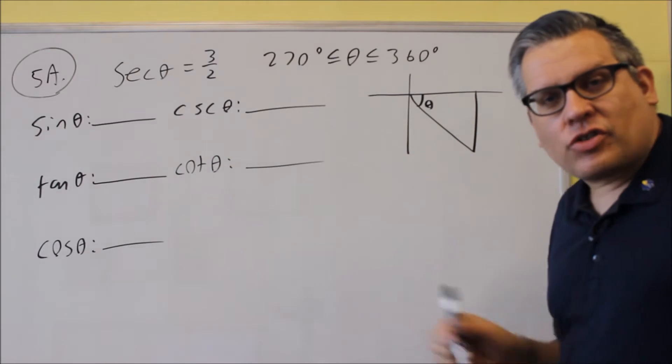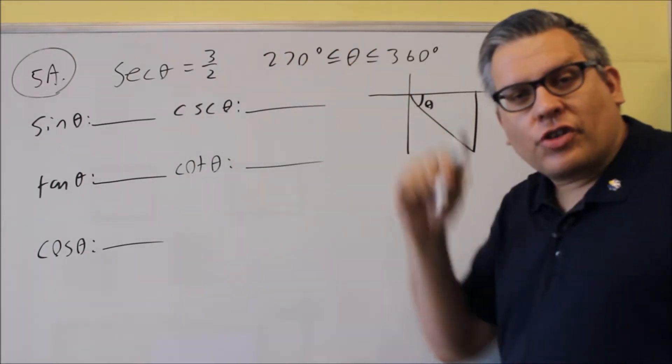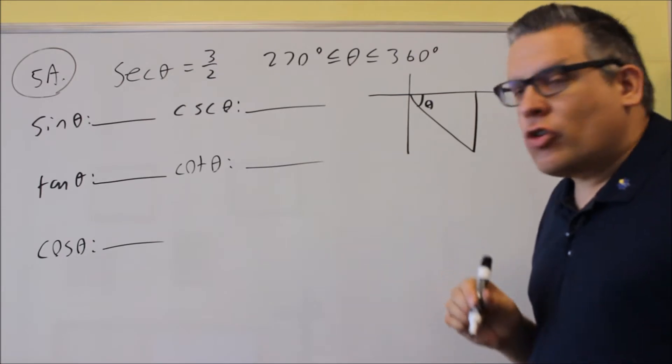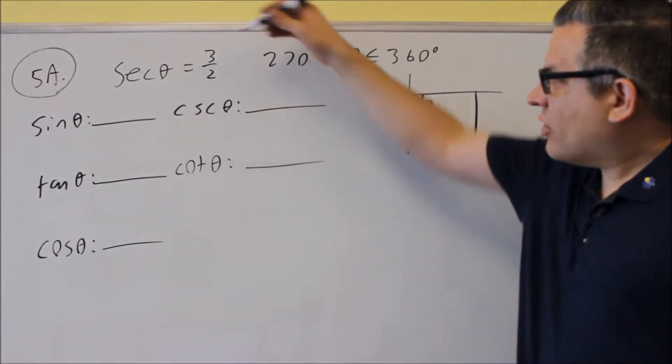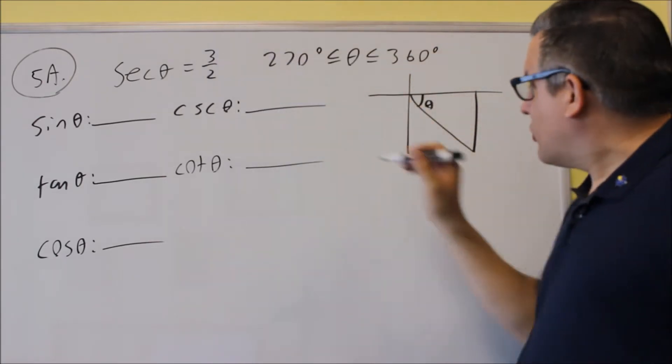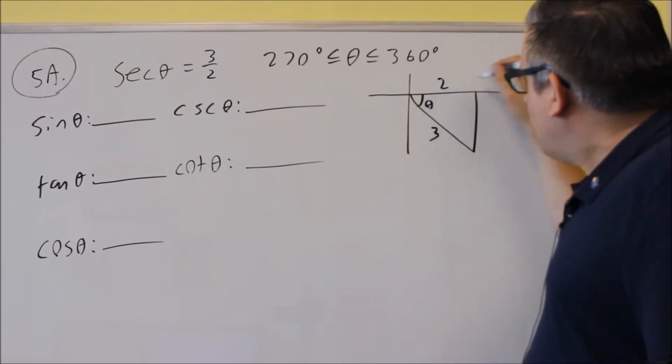Secant is equal to three halves. Now, if we talk about secant, if we look at the different definitions for it, secant would be hypotenuse over adjacent, which means that the top number is the hypotenuse. That's the longest side of the triangle. The adjacent is going to be two.